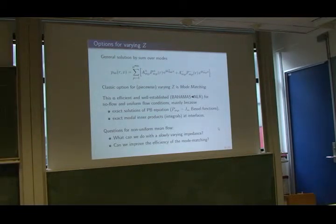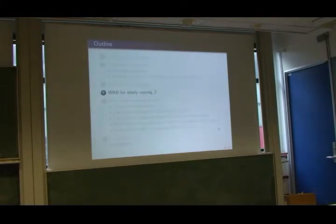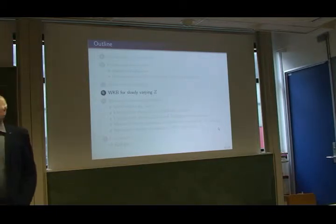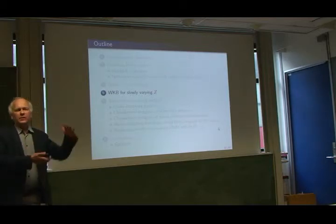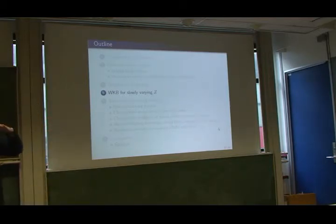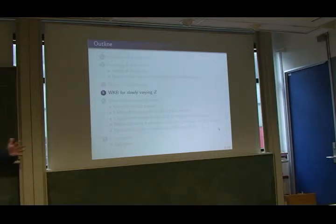First, the slowly varying Z. A slowly varying Z is a mode approximation — by definition, a mode requires everything constant in the propagation direction so you can Fourier transform. But if we vary the impedance or mean flow or diameter, modes do not exist. This problem was already addressed in the 1930s in quantum mechanics, for waves traveling through slowly varying material such as light or sound in a slowly varying atmosphere.